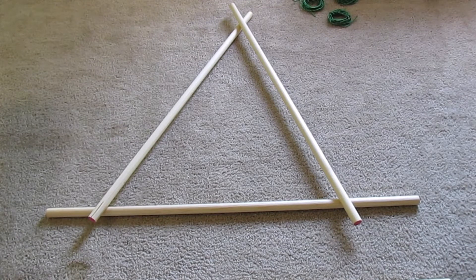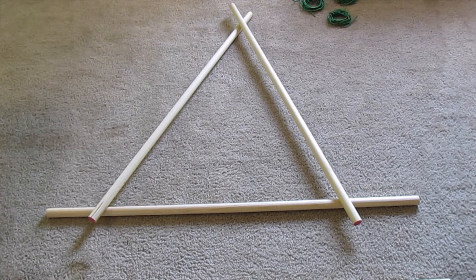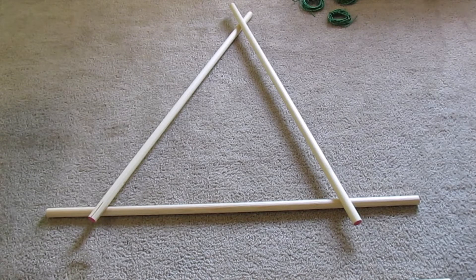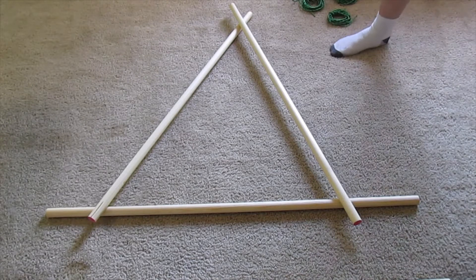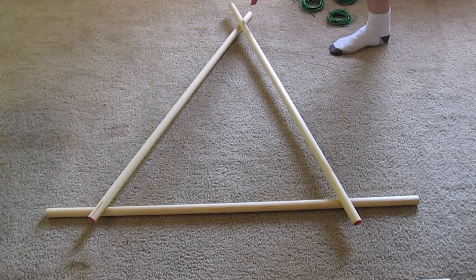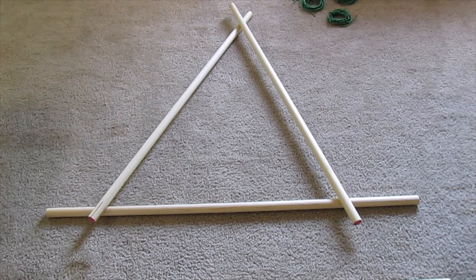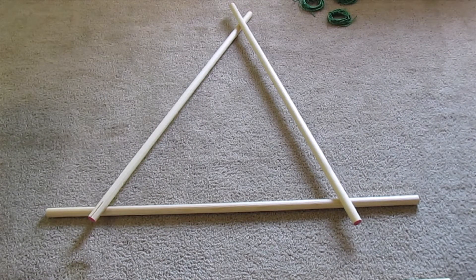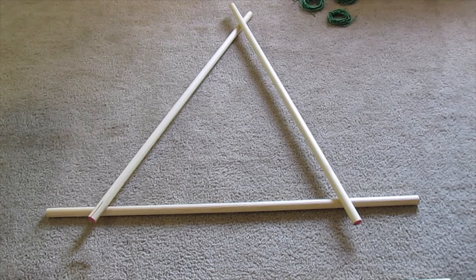So what we're going to do is in this trestle, which is called the X trestle, you can see it gets its name by forming the X right here. We're going to use two square lashings and one shear lashing.